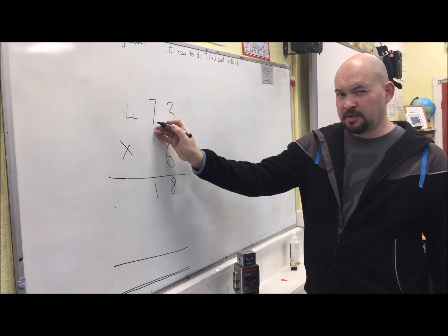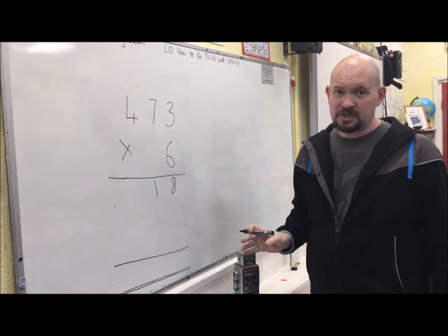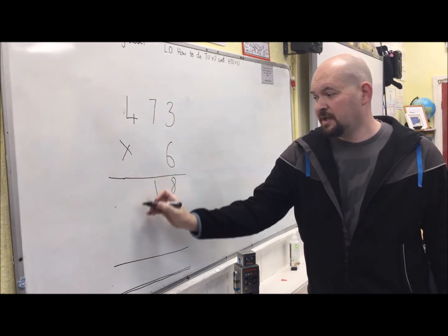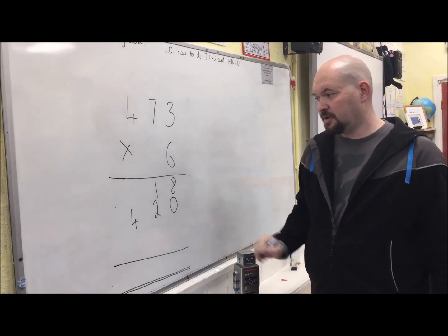6 times 7, well I know that's 42. So 6 times 70 would be 10 times bigger, 420. Hundreds, 400, tens, 20 units.